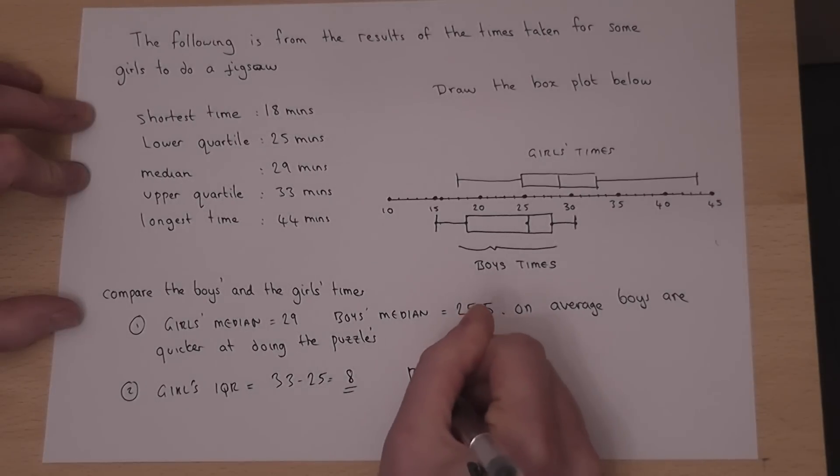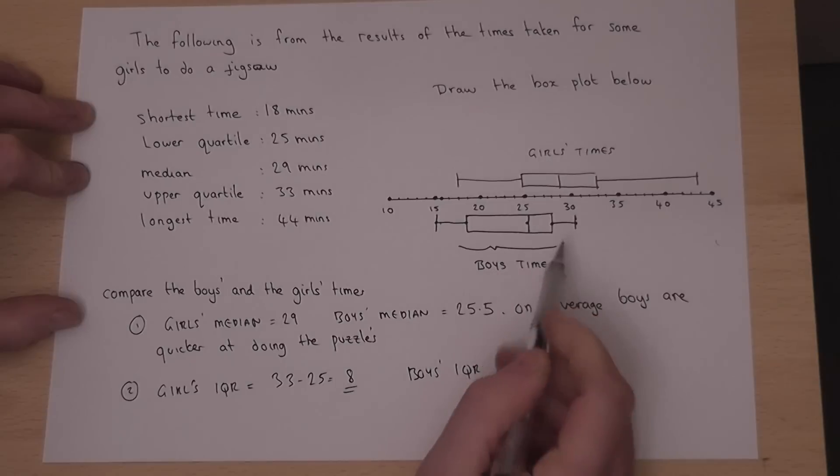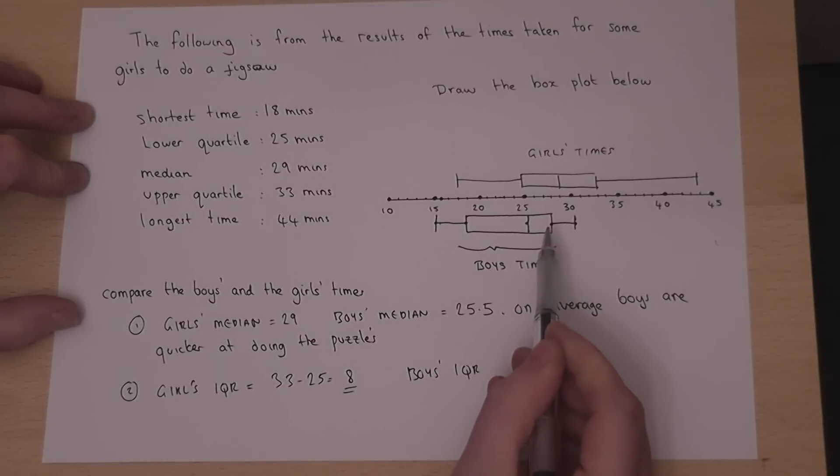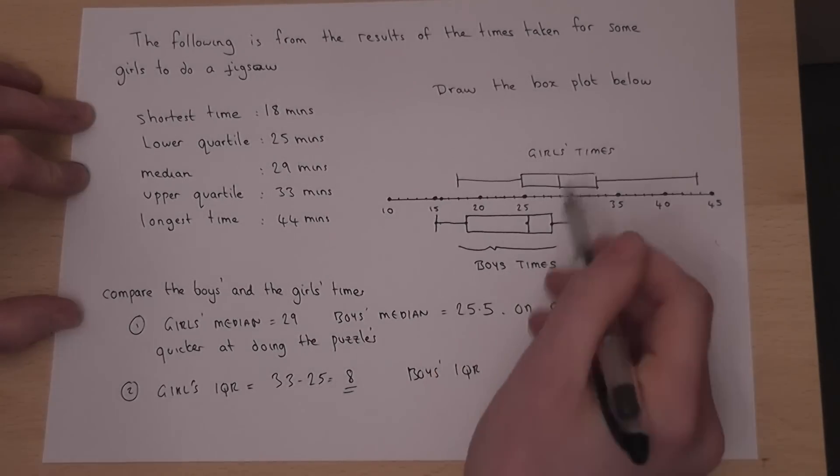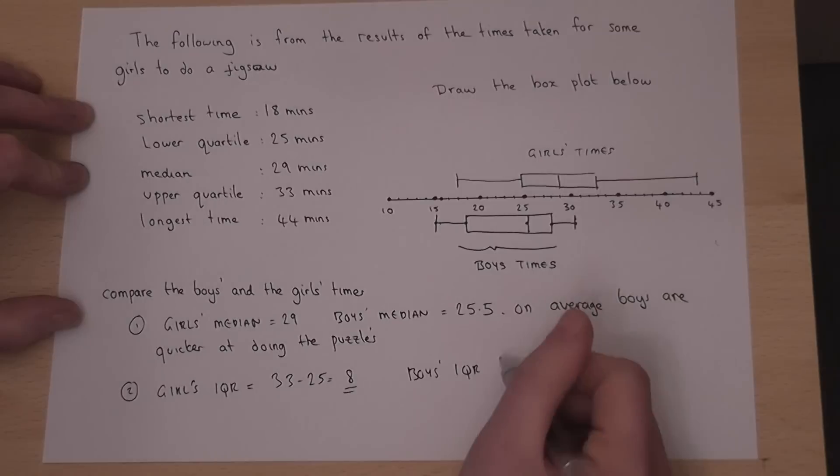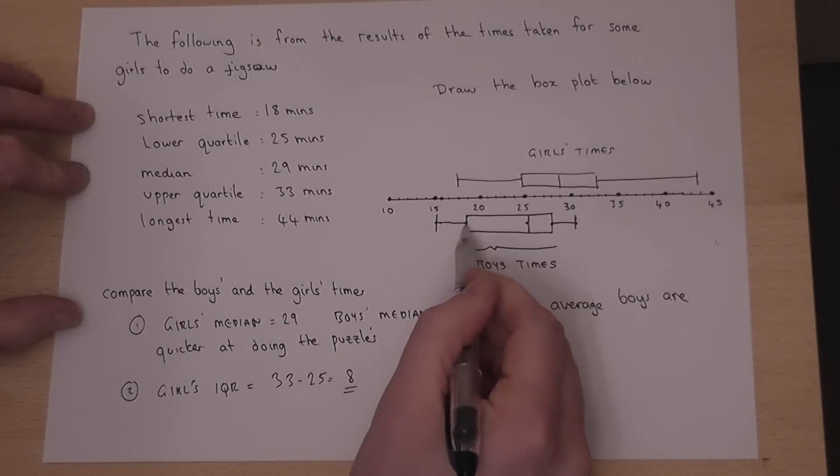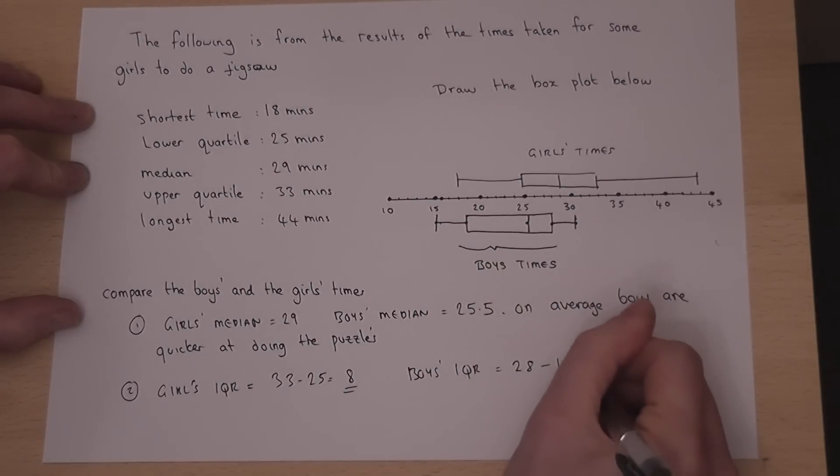Now the boys' interquartile range is found from their upper quartile minus their lower quartile. Now their upper quartile is at 28, and their lower quartile is down at 19. So their interquartile range is 9 minutes.